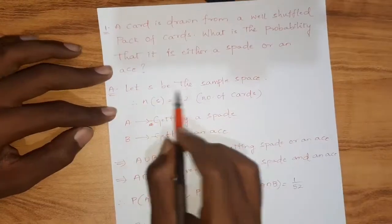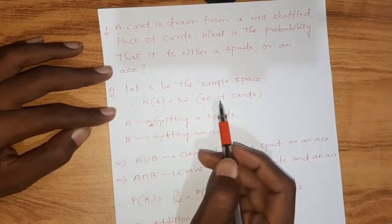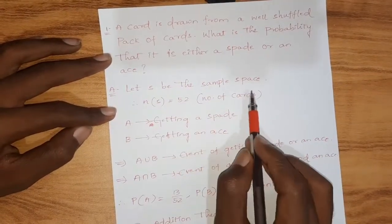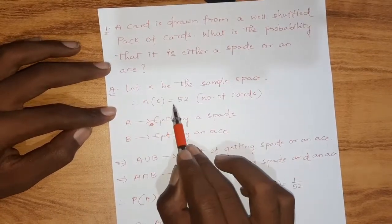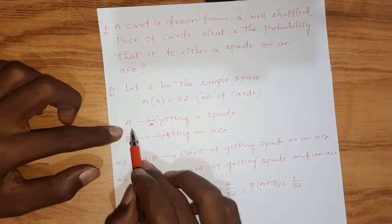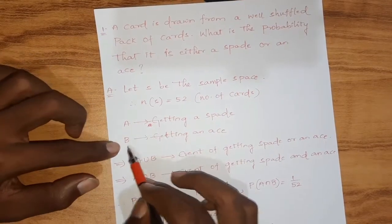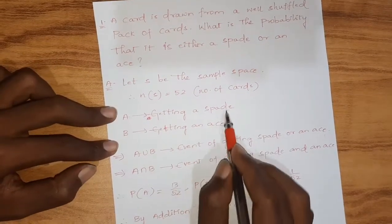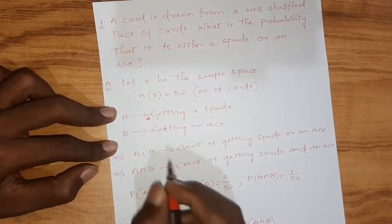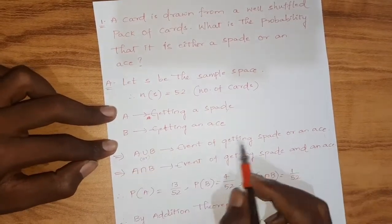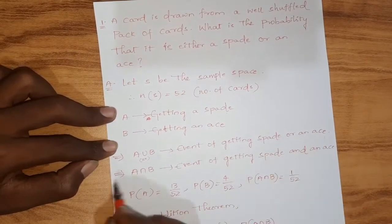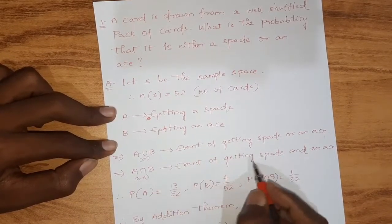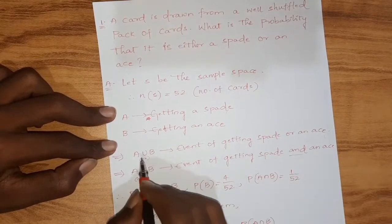Let S be the sample space. Therefore n(S) = 52, because there are 52 cards in a pack. Let A be the event of getting a spade and B be the event of getting an ace. A union B means getting a spade or an ace — union means 'or'. A intersection B means getting a spade and an ace — intersection means 'and'.